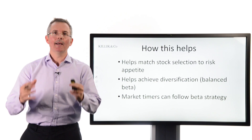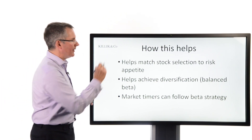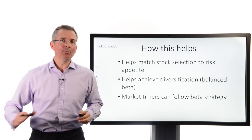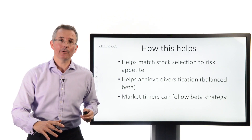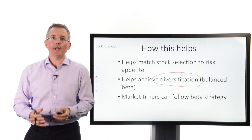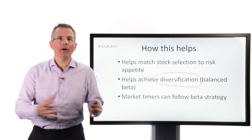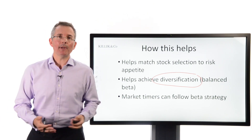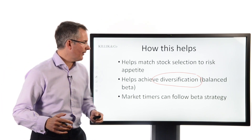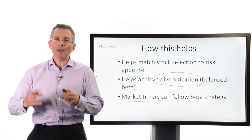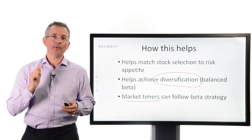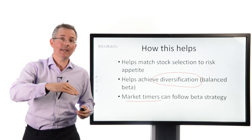How is that useful? Beta has several uses. Number one, it can help you pick stocks that match your risk appetite. High beta stocks tend to be more volatile and more risky — you get more bang for your buck in a bull market, but they fall harder and faster in a bear market. Beta can also help with portfolio diversification; a balanced portfolio will tend to have a mix of high and low beta stocks. Market timers can use this too: if the market is rising, you want high beta stocks; if it's falling, you want low beta stocks to lose money less quickly.